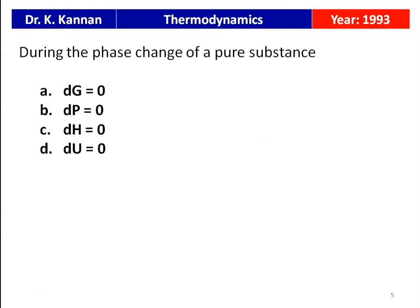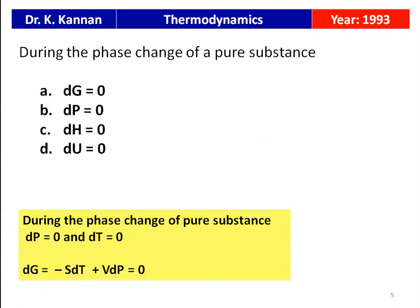The second question from the 1993 question paper: during the phase change of a pure substance, which is zero — DG (change in Gibbs function), change in pressure, change in enthalpy, or change in internal energy? During the phase change of a pure substance, the pressure and temperature remain constant. Since dG = VdP − SdT, and both dP and dT are zero, DG is also equal to 0. The correct answer is DG equal to 0.